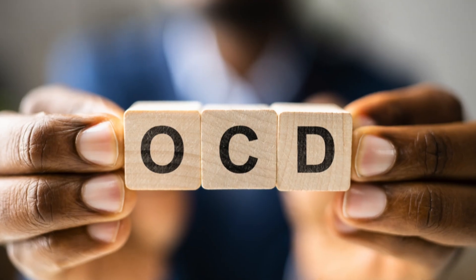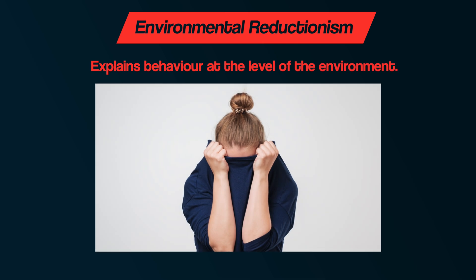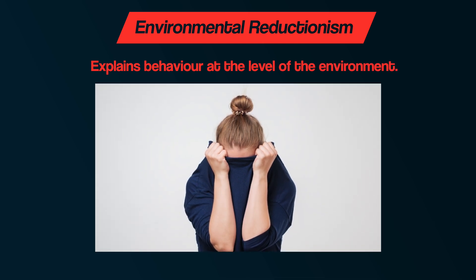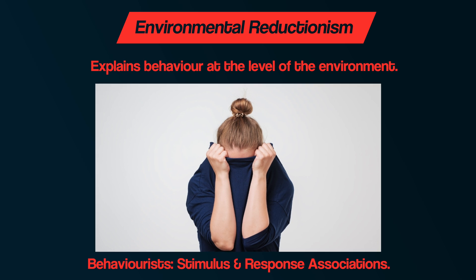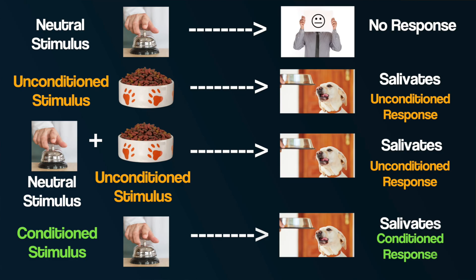For example, biological reductionism takes a complex behavior like OCD and breaks it down to the role of specific neurotransmitters, such as having lower levels of serotonin. Secondly, environmental reductionism explains behavior at the level of the environment and is typified by behaviorist explanations — that all behavior can be explained in terms of simple stimulus-response links. For example, phobias would be the result of classical conditioning, the association of a neutral stimulus with an unconditioned stimulus, maintained by negative reinforcement.